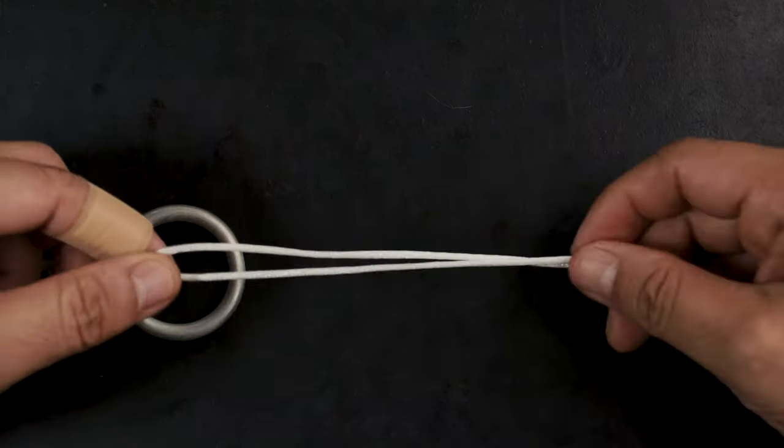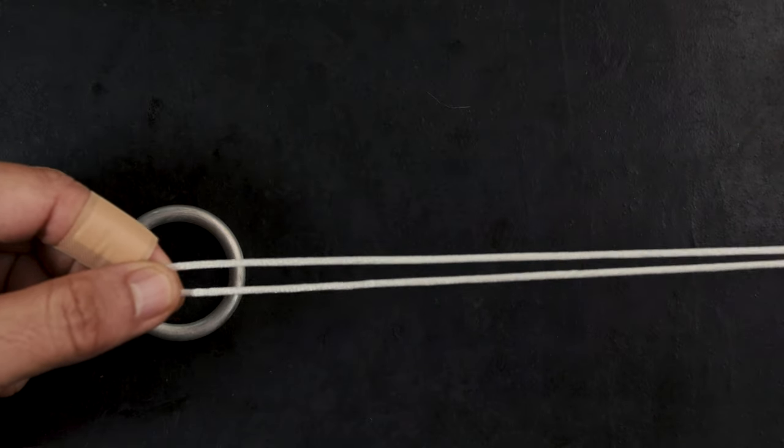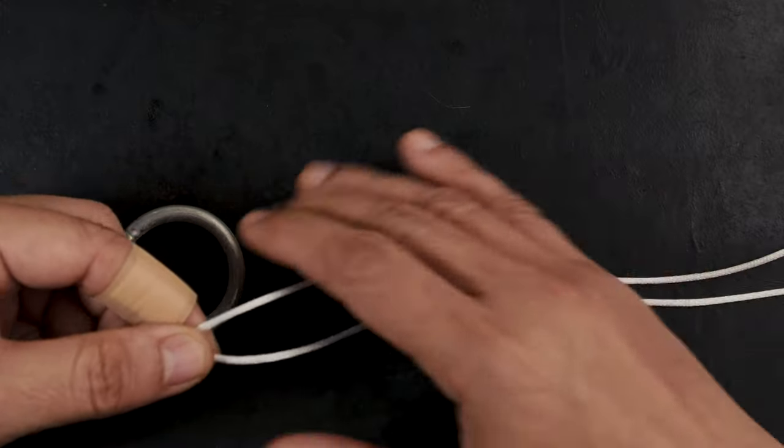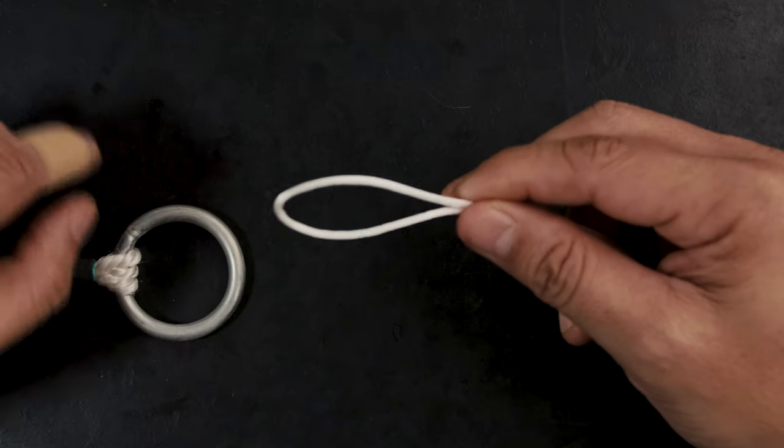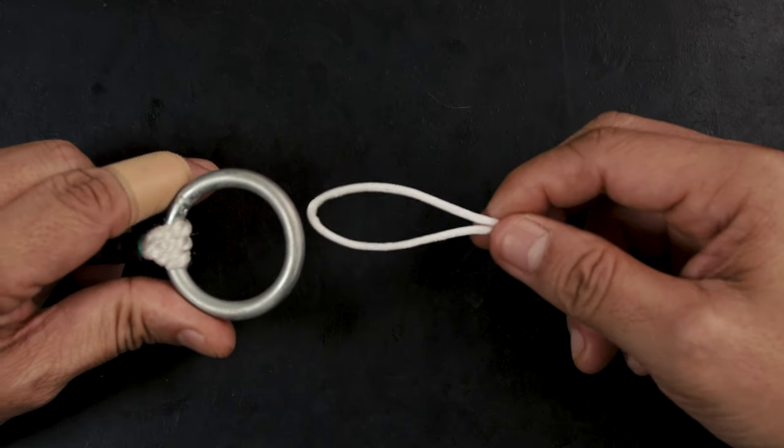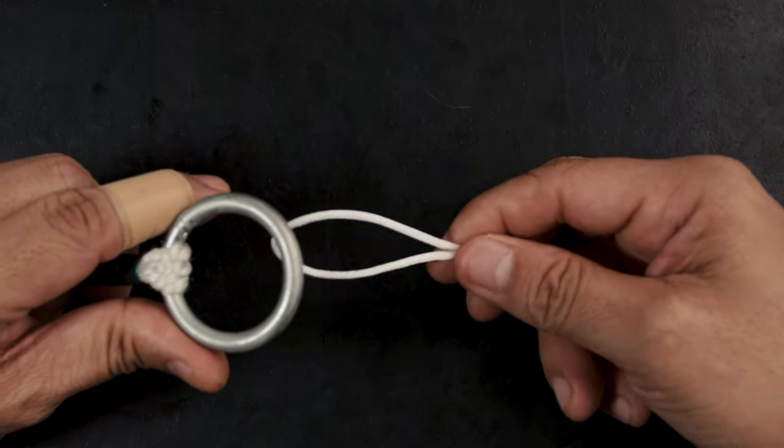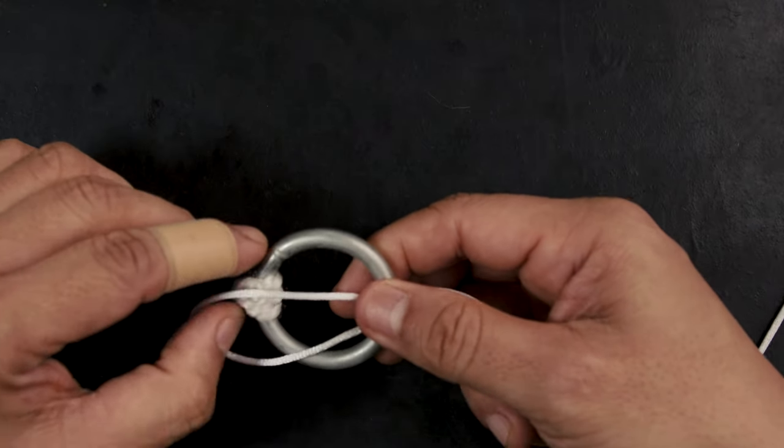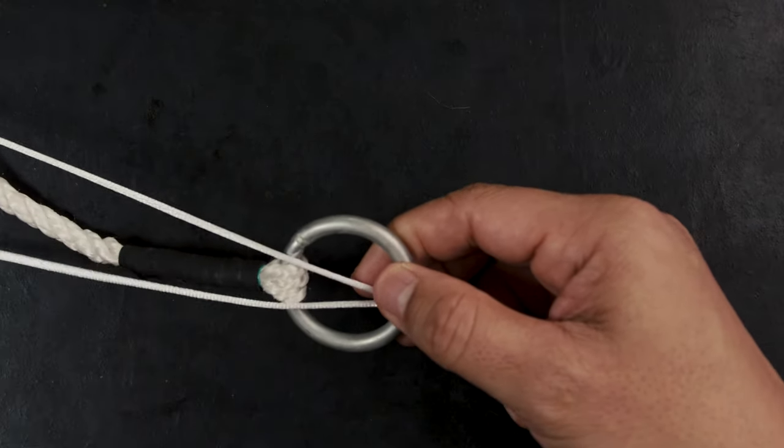So for the purposes of this demonstration, we're going to be using this white cord so it's quite visible. We're going to be using this big ring right here so that you can actually see better. Now how I do it is I double up like so, and then just pass everything through the ring.